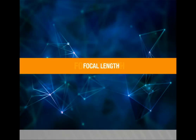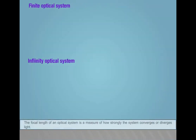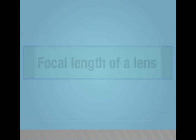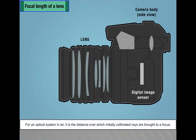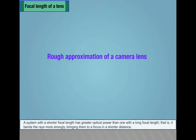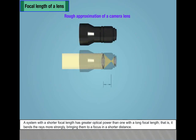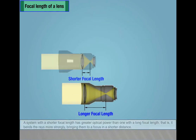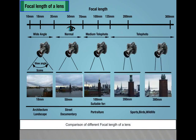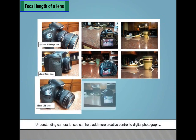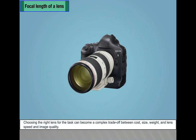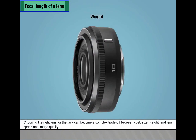Focal length. The focal length of an optical system is a measure of how strongly the system converges or diverges light. For an optical system in air, it is the distance over which initially collimated rays are brought to a focus. A system with a shorter focal length has greater optical power — it bends the rays more strongly, bringing them to a focus in a shorter distance. Understanding camera lenses can help add more creative control to digital photography. Choosing the right lens for the task can become a complex trade-off between cost, size, weight, lens speed, and image quality.